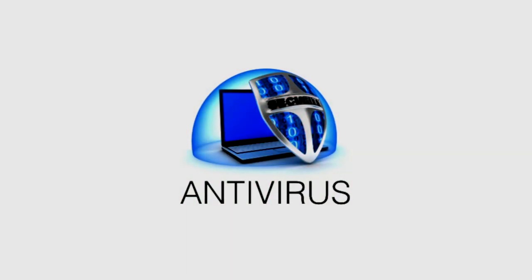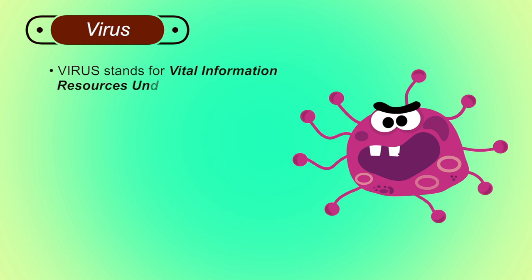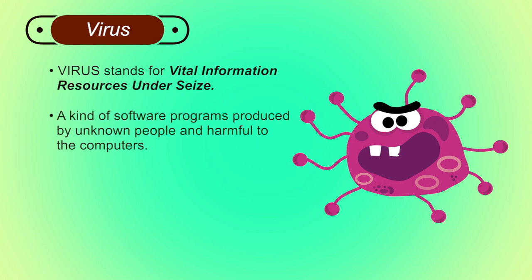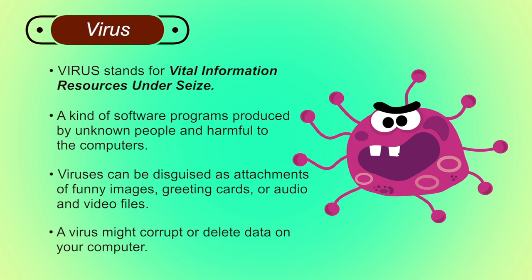Now we will discuss another cyber security technique: antivirus. Before discussing antivirus, we should know the meaning of virus and other malware types. A virus (Vital Information Resources Under Siege) consists of small software programs designed to spread from one computer to another and interfere with computer operations. Viruses can spread through attachments of funny images, greeting cards, audio or video files, and can corrupt or delete data. Importantly, a virus requires human intervention to spread.